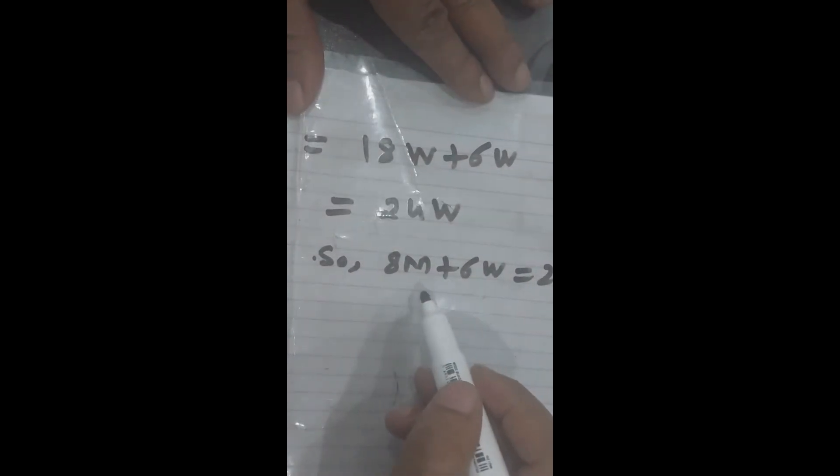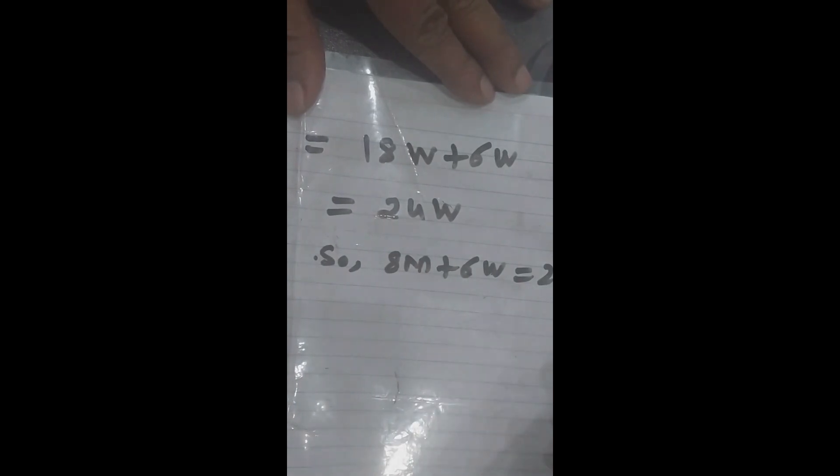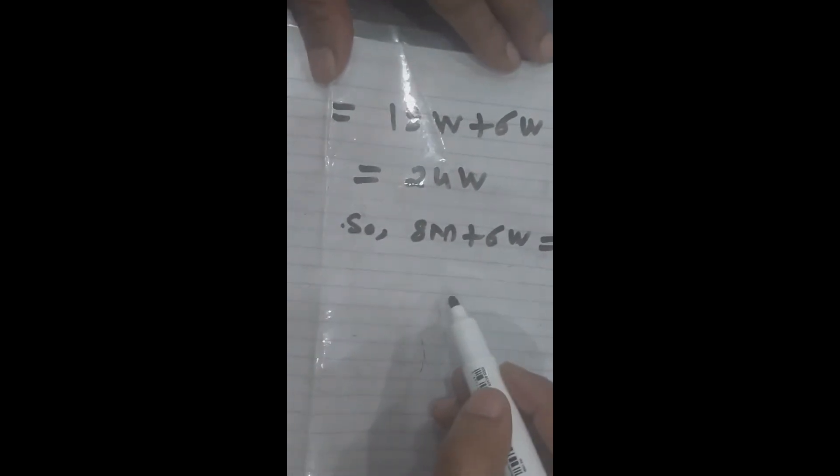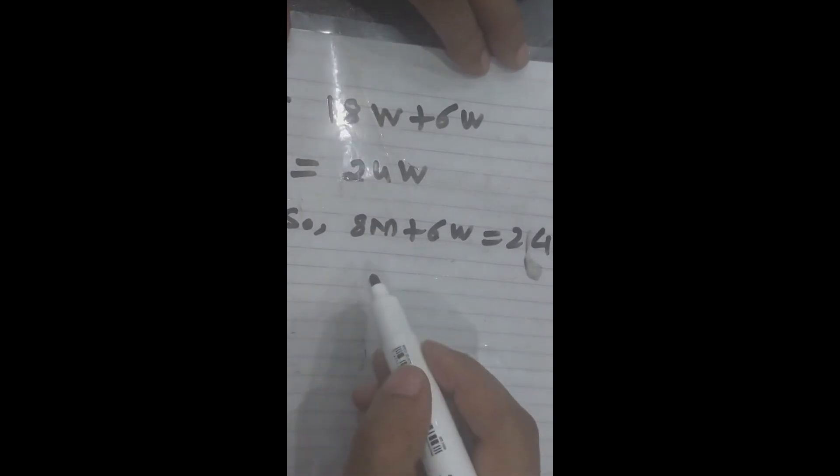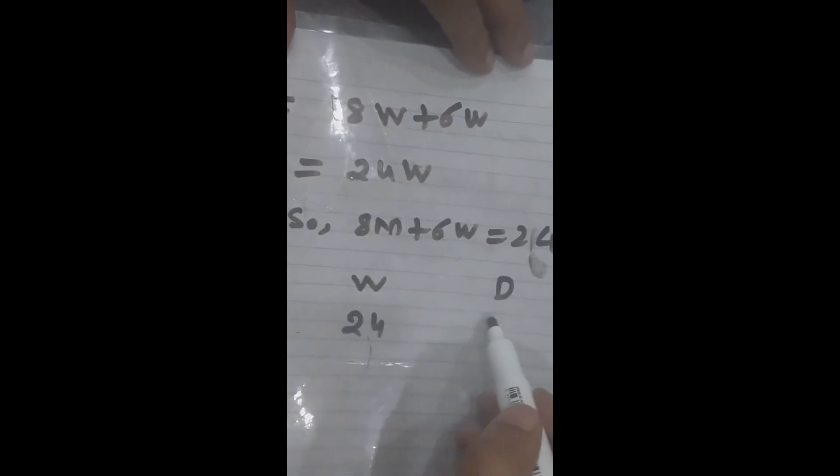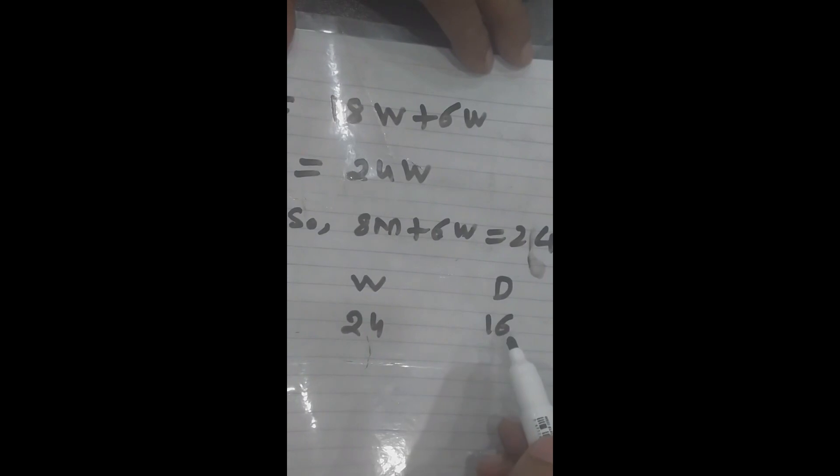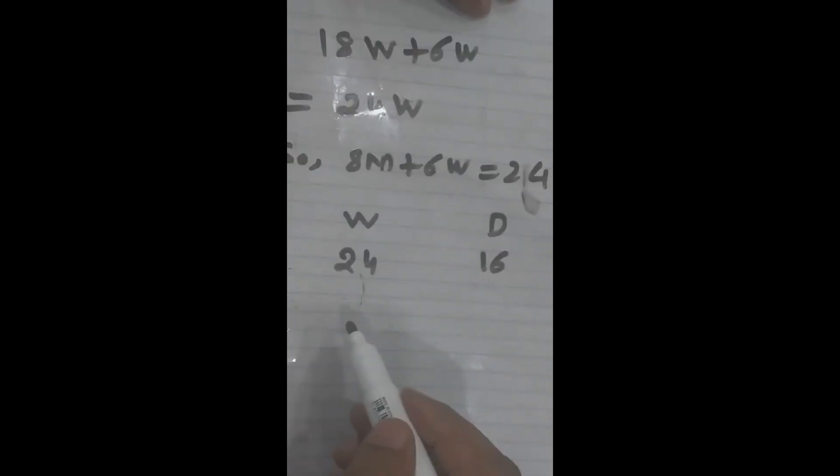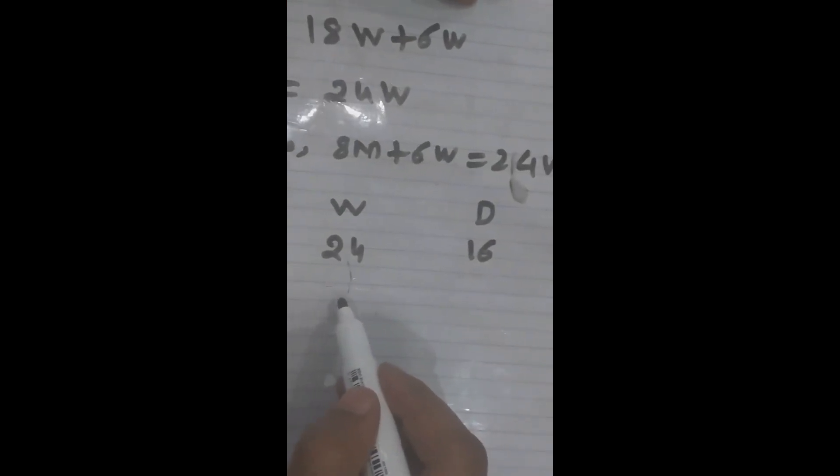Now our question was in how many days these 8 men and 6 women can finish the work, or we simply say in how many days 24 women can finish the work. So we are given that 24 women finish the work in 16 days, and our question is in how many days these 24 women will finish the work.